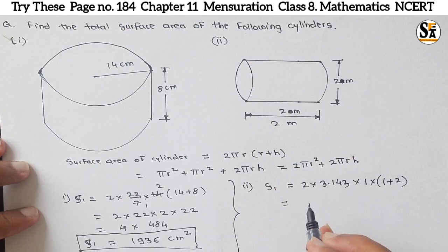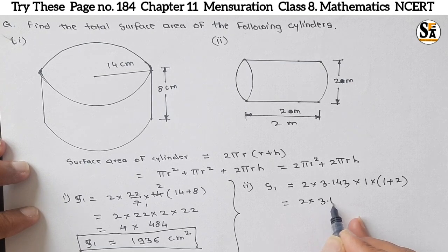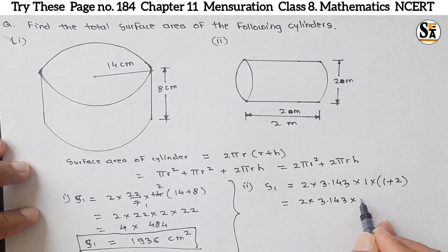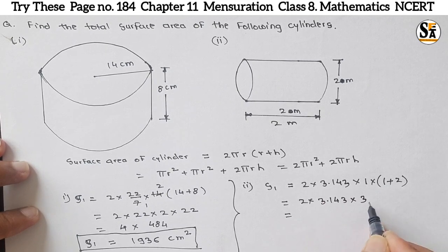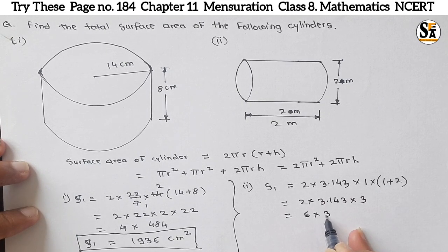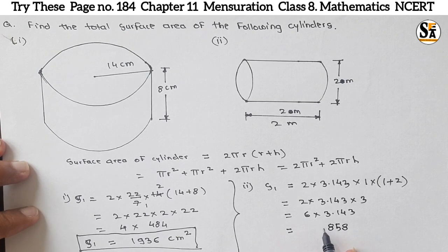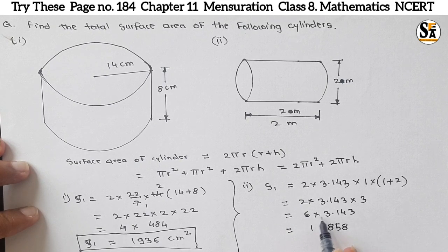So multiply all this, we will get 2 × 3.143 × (1+2) × 1, which means it is 3. So further simplify: 2 × 3 is 6. 6 × 3.143, we will get 3 × 3 that is 18. Then 3 × 4 is 24 + 1, 25. Then 2, 3, 6 + 1 that is 8. And here 6 × 3 is 18. So our answer is 18.858 and unit will be meter square.